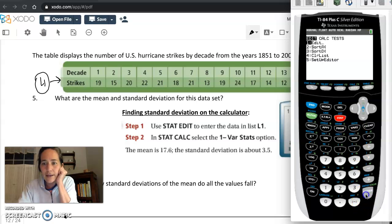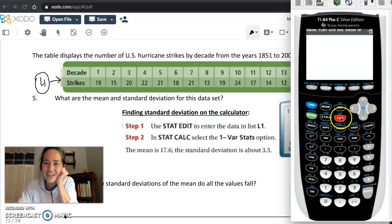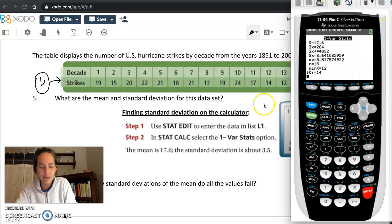I'll hit stat, edit. Nope, stat, where was one variable? Whoops, stat and then calc. How about stat, calc, one variable statistics for L1, enter, enter. Then you should be able to write down exactly what you see on the screen here, the mean, standard deviation, all that stuff. That was all they were asking. The mean is 17.6. You can circle that here. Standard deviation is 3.5.